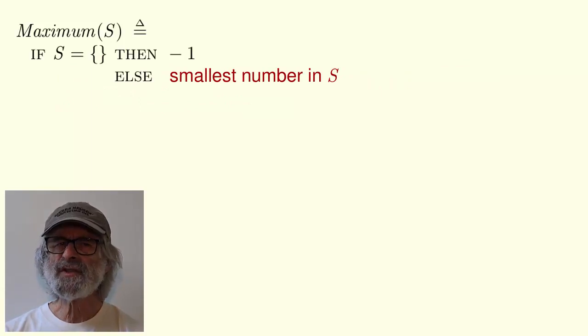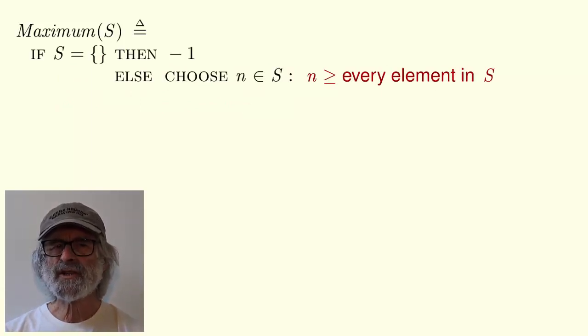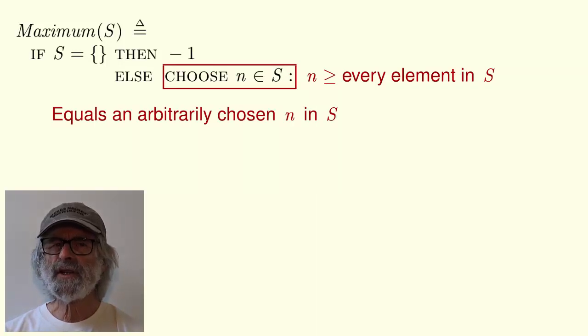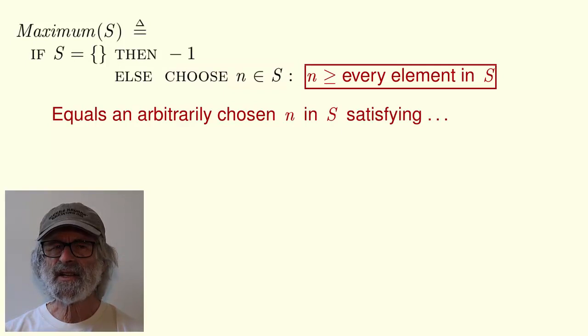We don't care what it equals if S is infinite or not a set of numbers. The definition has this form. The smallest number in S is written this way, where the choose expression equals an arbitrarily chosen value N in S, satisfying the condition that N is greater than or equal to every element in S. If S is finite and non-empty, then there is exactly one such N.